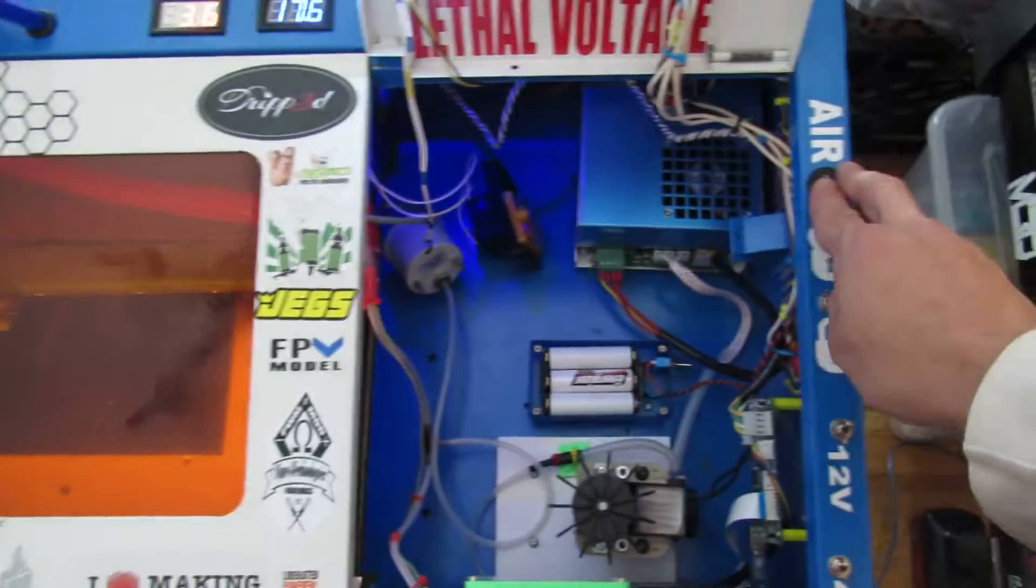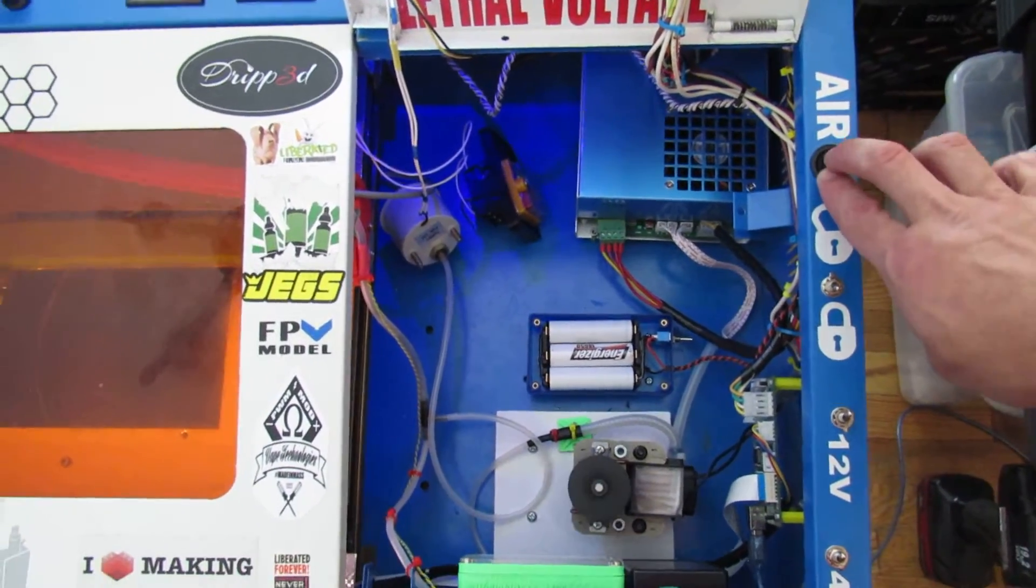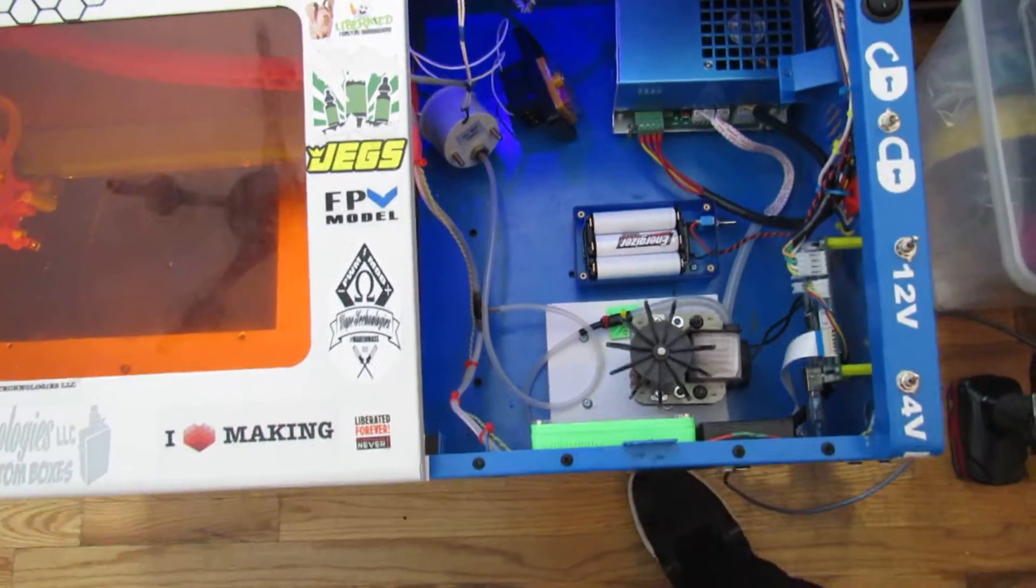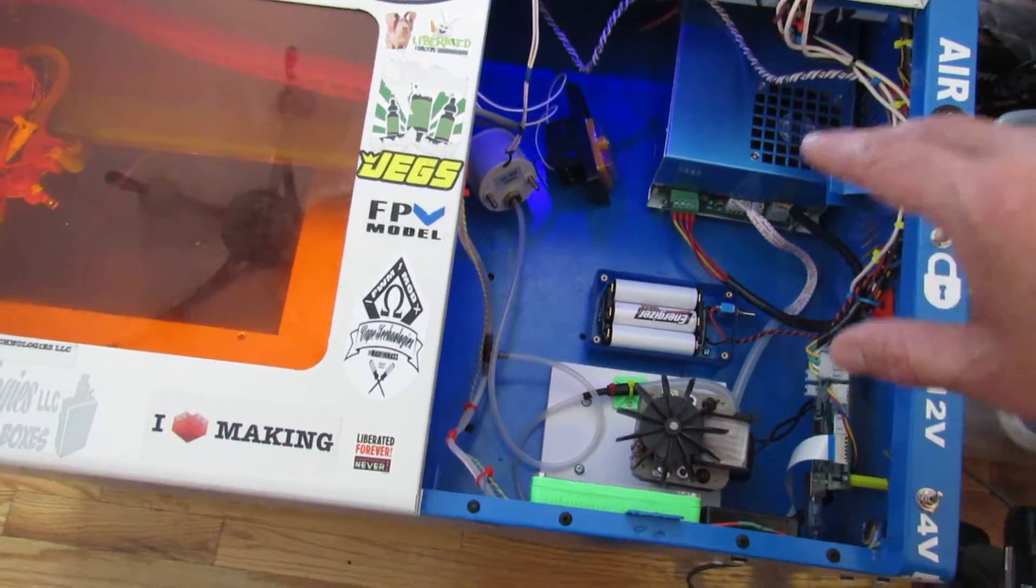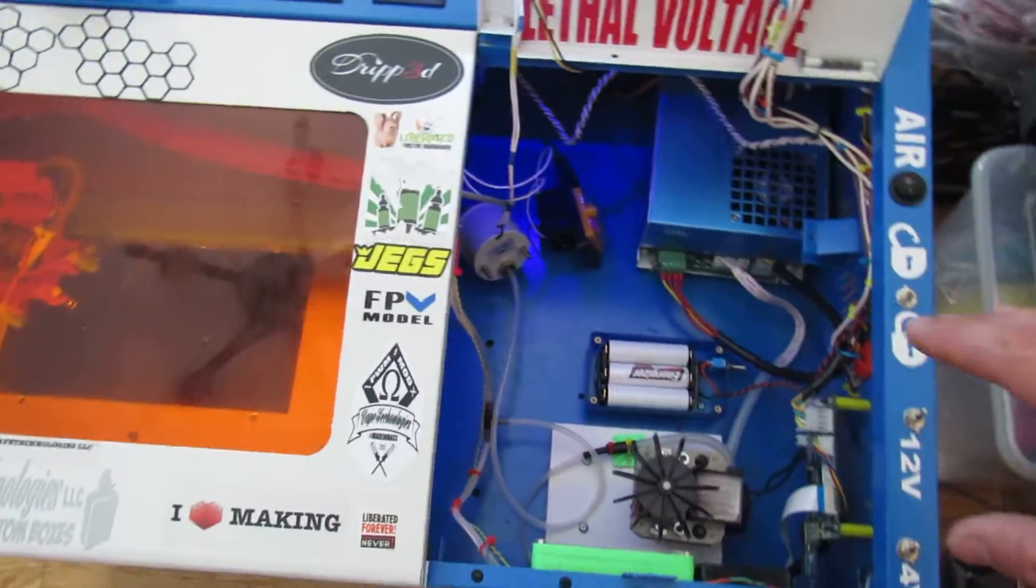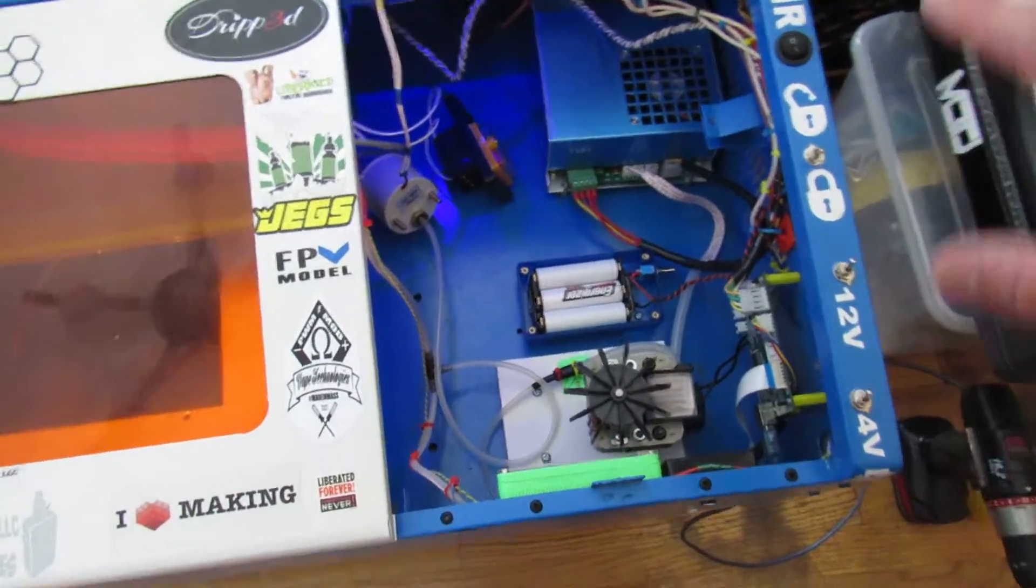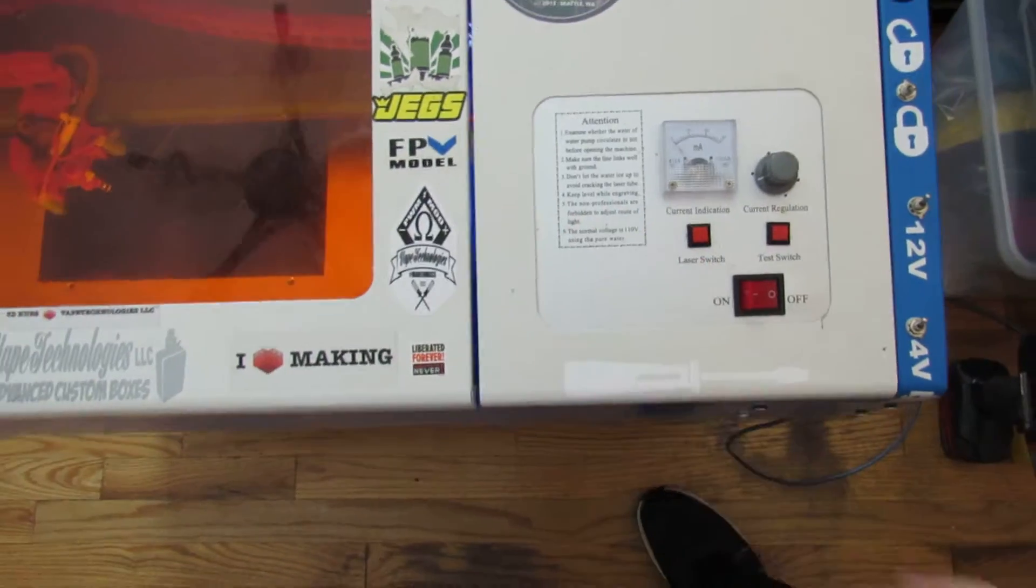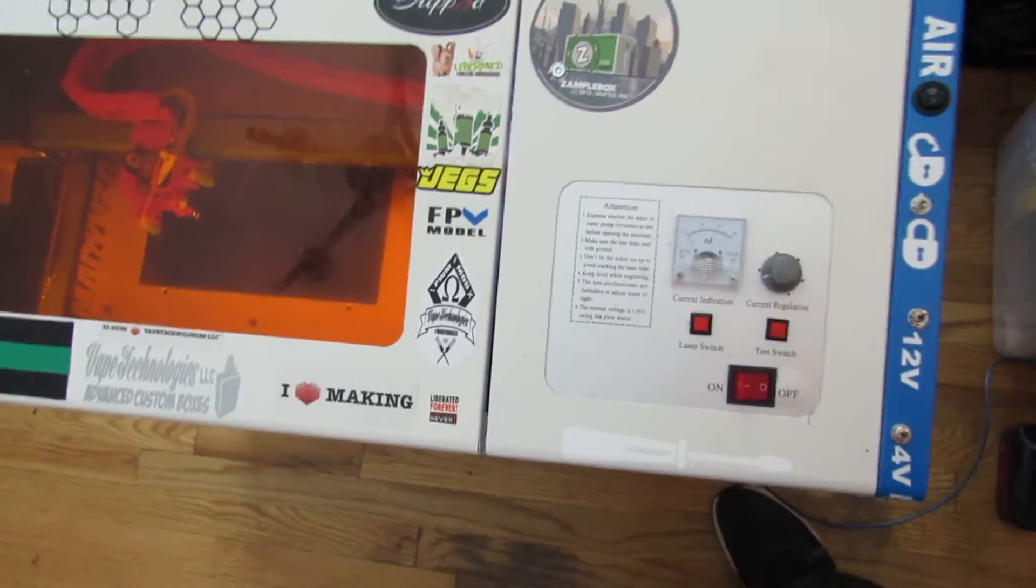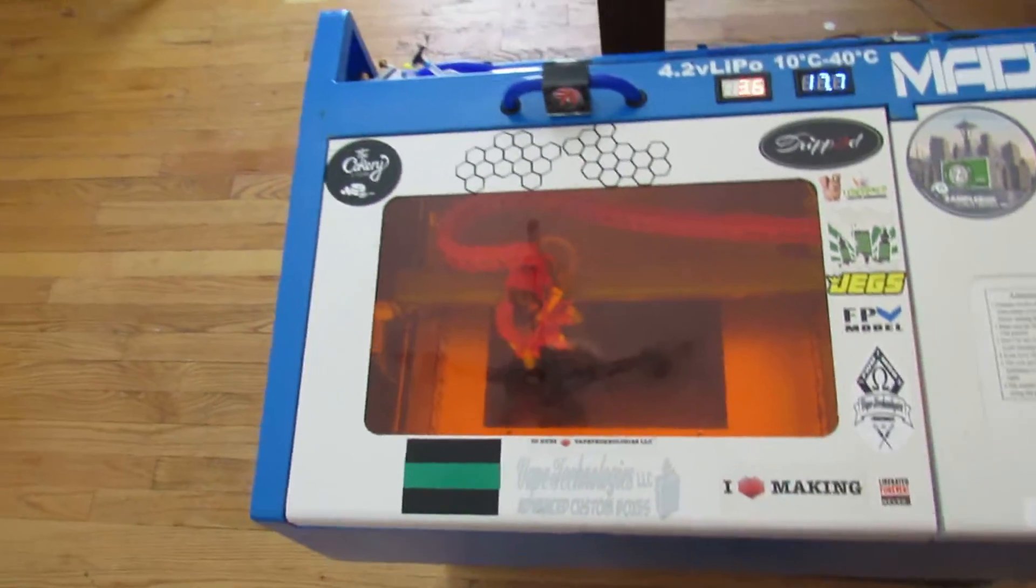I just want to get all that out of the way so there's no confusion. Everything—the power, the PSU—is only powering what it should be. There's no mods to that whatsoever. Everything's on its own source. The water's on its own, everything's on its own source. We're going to get a new panel cut. I should have done that a long time ago.